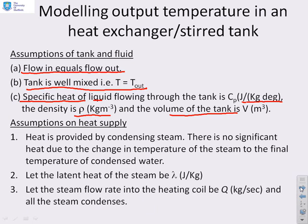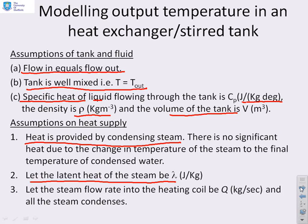For this video we are going to assume that the heat is provided by condensing steam. Once the steam is condensed, the resulting water will continue to reduce in temperature and therefore provide some energy. However, we're going to argue that the amount of energy provided by the cooling down of the steam is negligible compared to the latent heat, so we're going to ignore that — it's probably of the order of magnitude of 10 to the minus 3 and therefore not really significant in terms of a model. Let's assume that the latent heat of the steam is lambda, in joules per kilogram, and we're going to let the steam flow rate into the heating coil be Q, in kilograms per second. We're also going to assume that all the steam condenses.